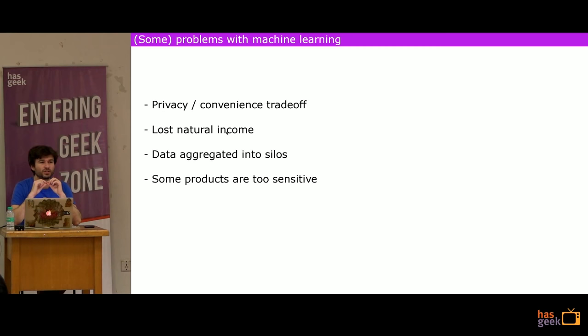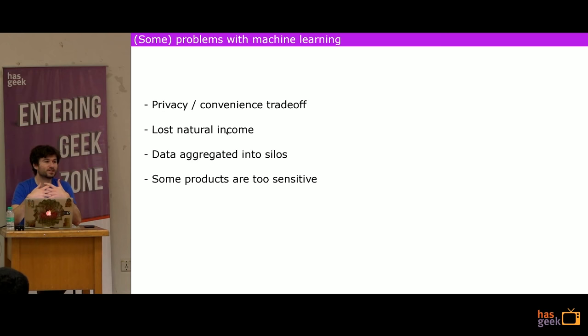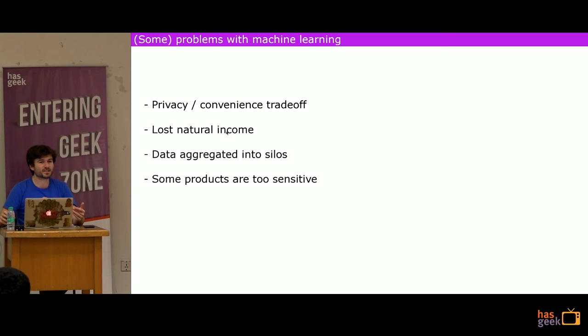The second problem is lost natural income. When you are generating data for AI Incorporated, it's labor you're performing — you are generating data through the way you're interacting with their service — and you are not being paid or compensated in any way. The return is that you get some free service, which is usually not a very good service. Many people have been commenting on this for years: maybe it should make sense that when people generate data, there should be some incentive for them to do so, rather than just getting a free service.